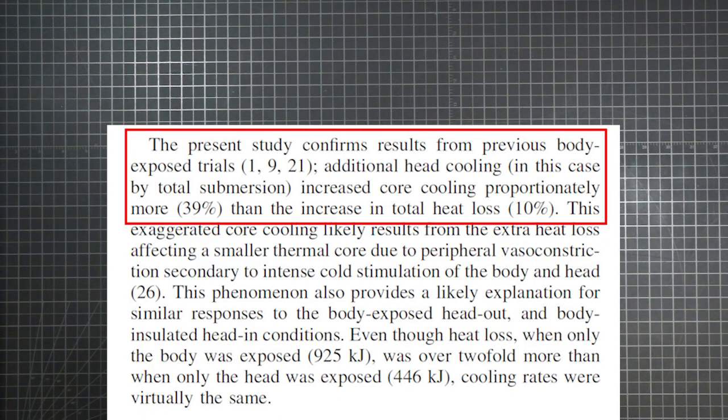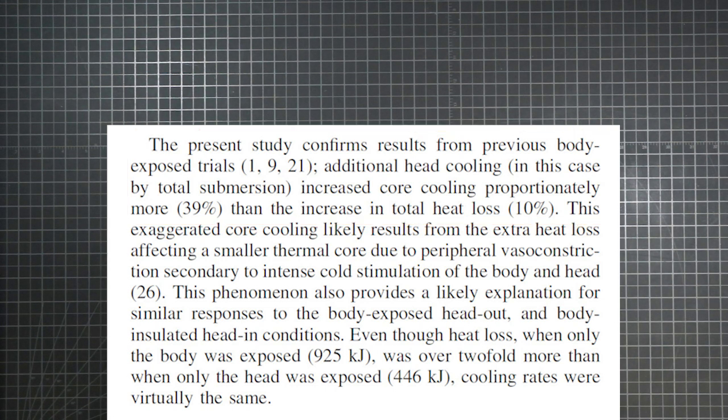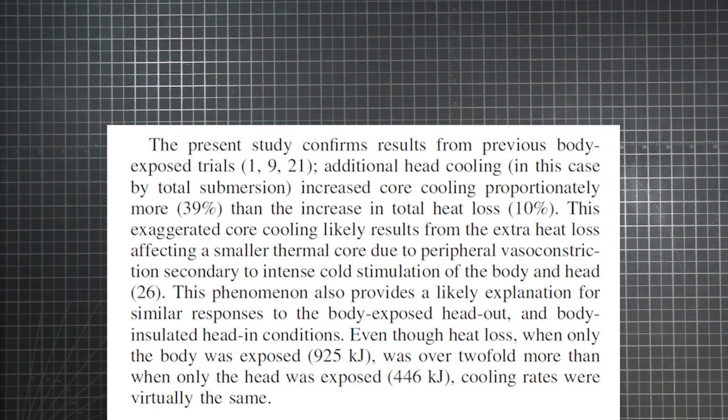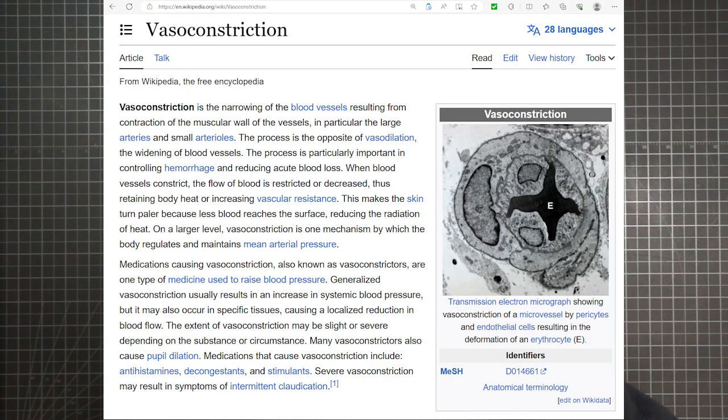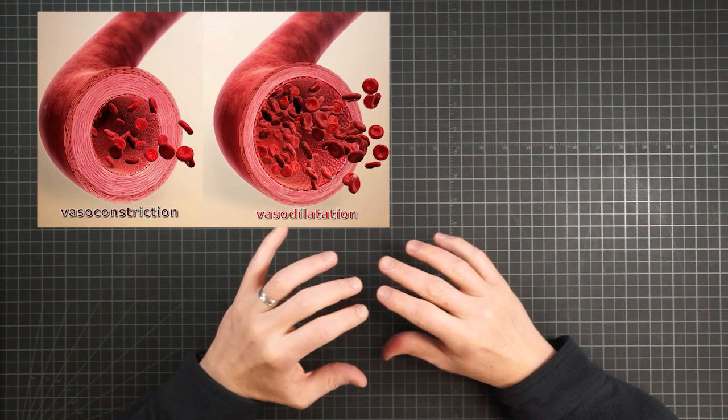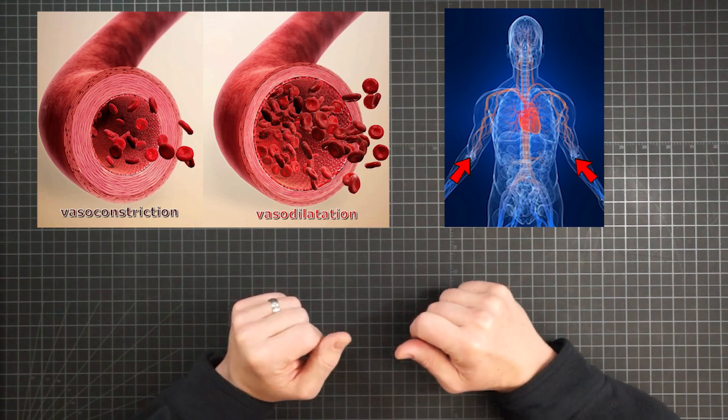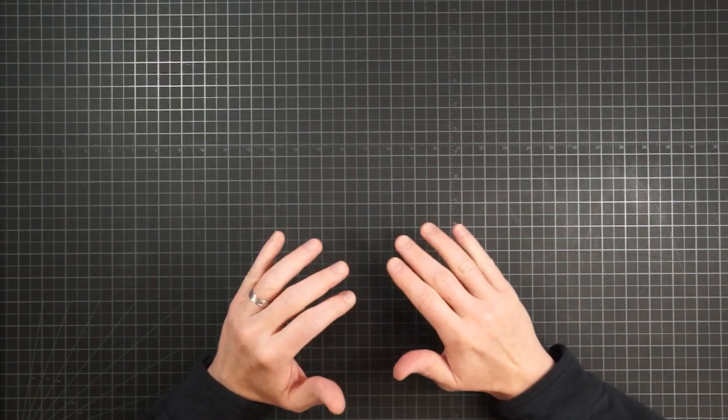As to why that might be, they say, this exaggerated core cooling likely results from the extra heat loss affecting a smaller thermal core due to peripheral vasoconstriction secondary to intense cold stimulation of the body and head. The vasoconstriction is the narrowing of the blood vessels by the contraction of their muscular wall. This shrinks the inner diameter of the vessels. And when that happens in the periphery, it has the effect of squeezing blood out of your limbs and back into your core. The head seems to be particularly important in this response for at least two reasons.